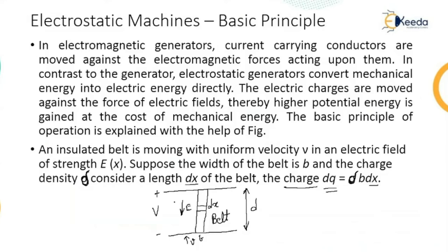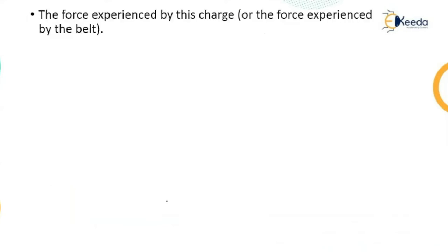Considering this diagram, we are going to derive the equation. The force experienced by this charge or the force experienced by the belt, let us say it is DF. DF is equal to E multiplied by DQ. What does E stand for? The electric field multiplied by DQ. Now, DQ is E multiplied by sigma into B into DX.